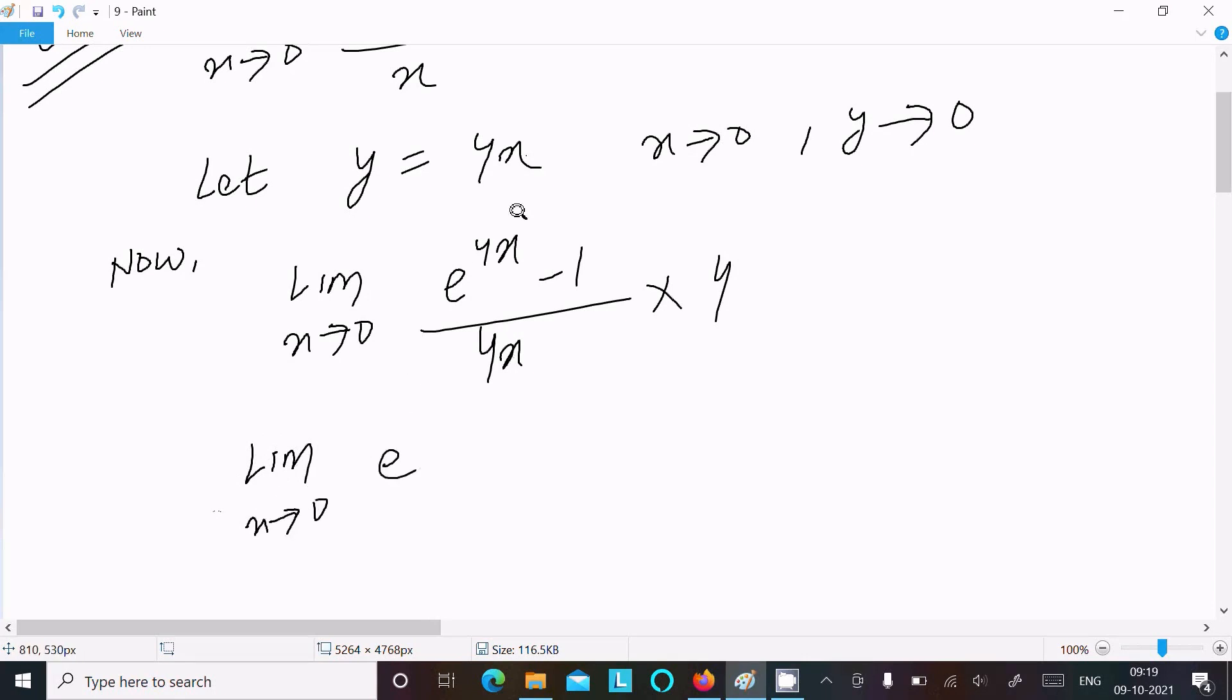E power 4x, we can write y, minus 1 divided by 4x, we write y. So here, this is 4. Now we know the formula.